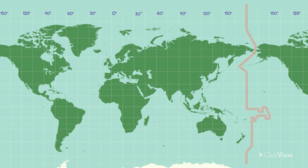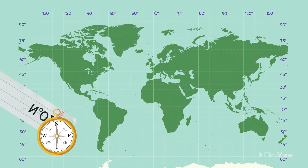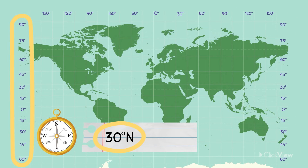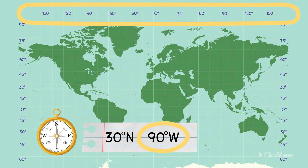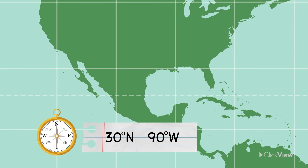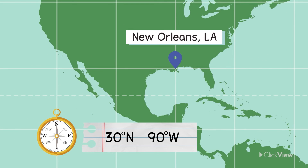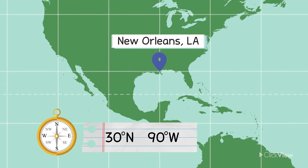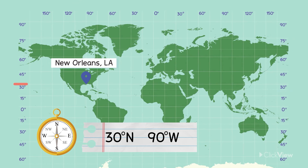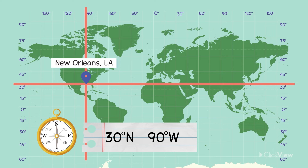When stating absolute location, the latitude, or position north or south of the equator, is always stated before the longitude, or position east or west of the prime meridian. For example, this is the absolute location of New Orleans in Louisiana — it sits 30 degrees north of the equator and 90 degrees west of the prime meridian.